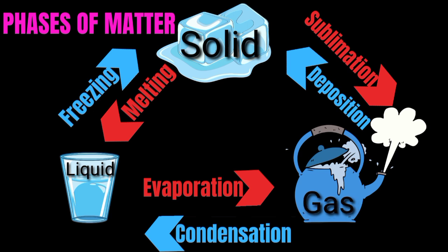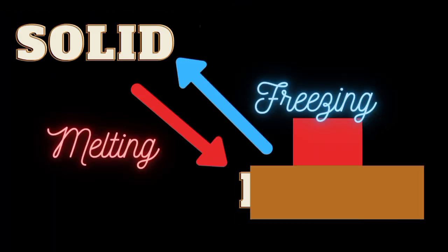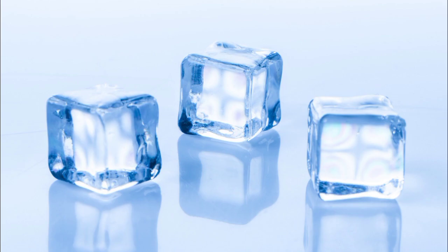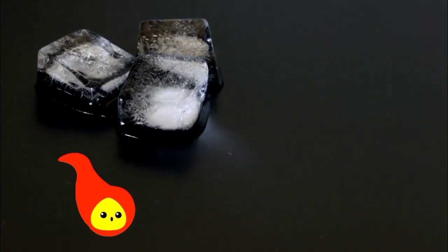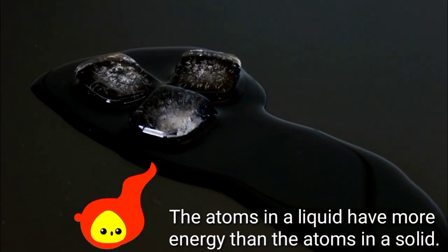Take note that each change has an associated name and that half of them are endothermic (red arrows) and the other half are exothermic (blue arrows). Each change occurs at a specific temperature as well. Imagine that you are a solid — a cube of ice sitting on a counter. You dream of becoming liquid water. Heat is probably the easiest energy you can use to change your physical state. The atoms in a liquid have more energy than the atoms in the solid.